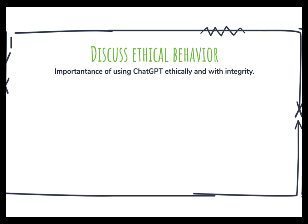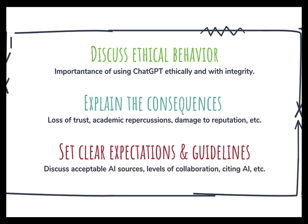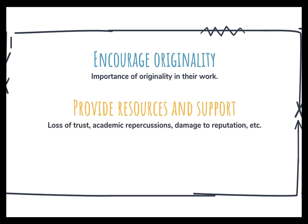If you do not have a college-wide or university policy, it may be beneficial to create your own classroom policy. Discuss the consequences of using ChatGPT improperly, such as possible loss of trust, future repercussions, and damage to personal and professional reputations. Set clear expectations and guidelines — including which sources are acceptable, the level of collaboration permitted — and encourage students to ask questions if unsure. Teach students about the importance of originality, explaining that plagiarism is not only unethical but also illegal.